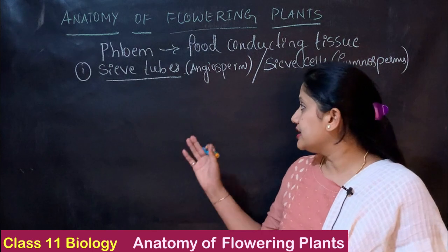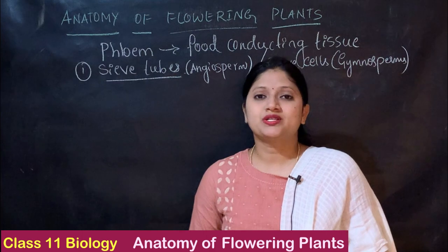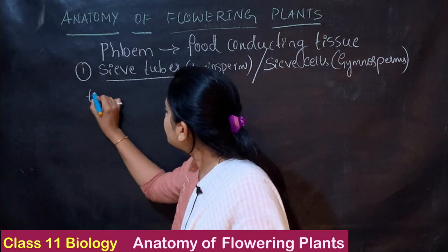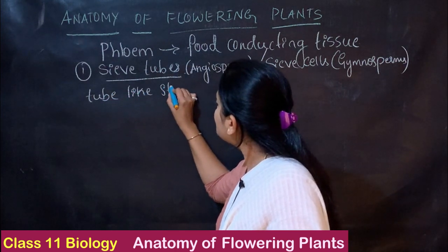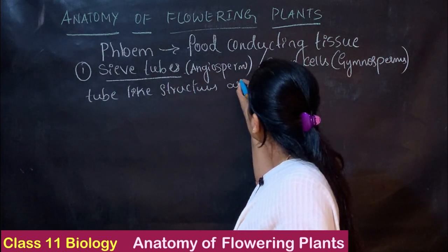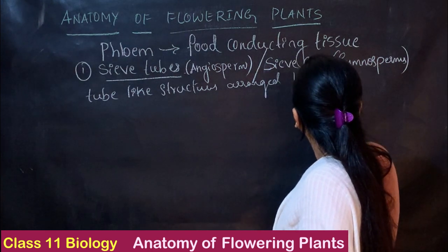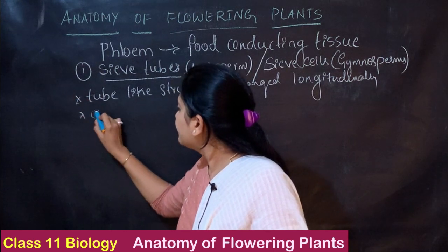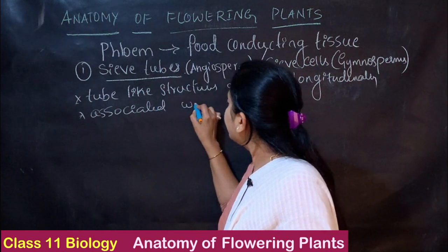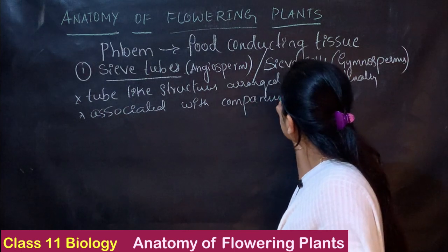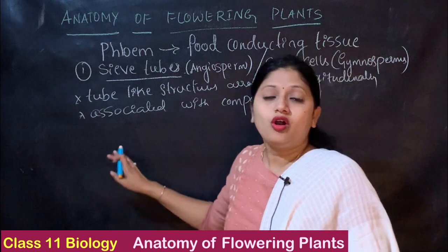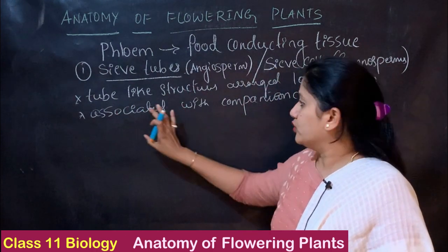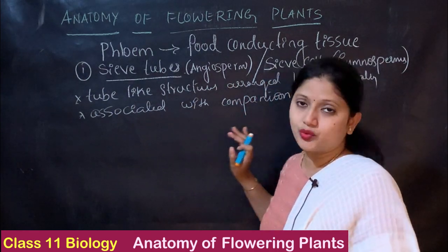There is a slight difference between sieve tubes and sieve cells, which I'll explain as we go on. Sieve tubes or sieve cells are tube-like structures which are arranged longitudinally. These are associated with companion cells. What companion cells are, we will see as the next element of the phloem.